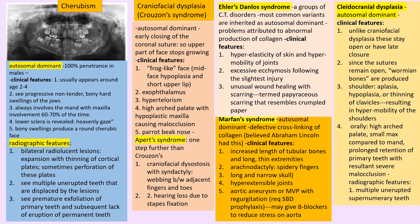Ehlers-Danlos syndrome is a connective tissue disorder with abnormal production of collagen — skin is hyperelastic with excessive ecchymosis, unusual wound healing, and paper-like scarring. Marfan syndrome is a genetic disorder with defective cross-linking of collagen affecting the skeleton, eyes (dislocated lens), heart (aortic aneurysm), hyperextensible joints, and a long narrow skull.